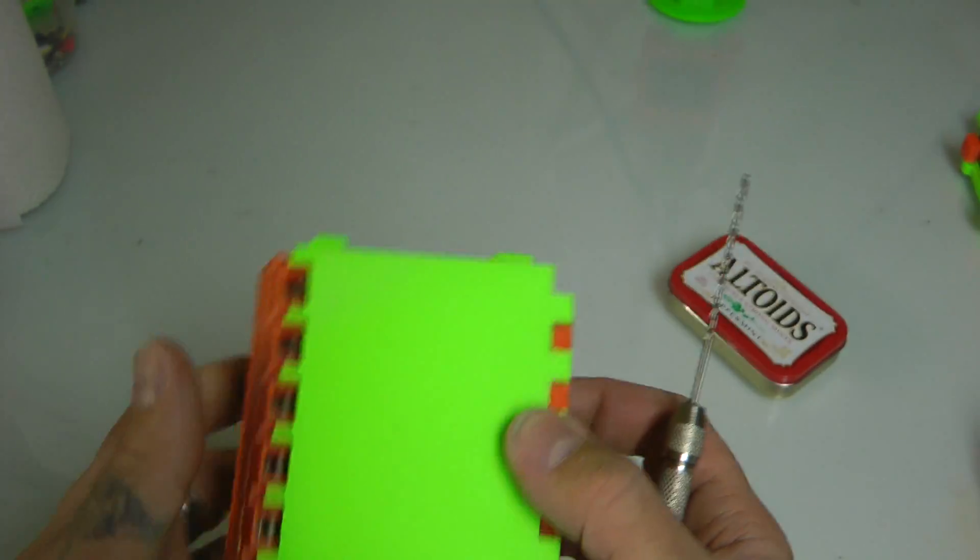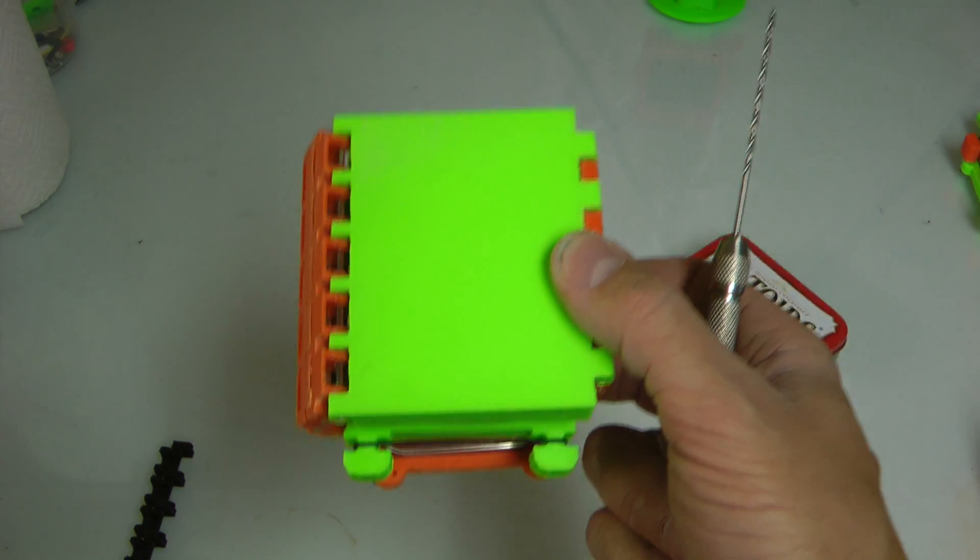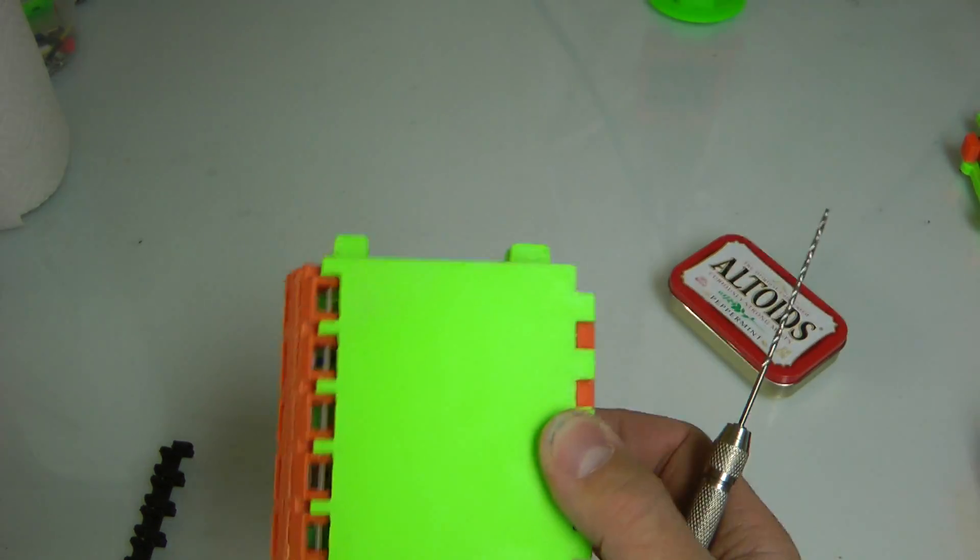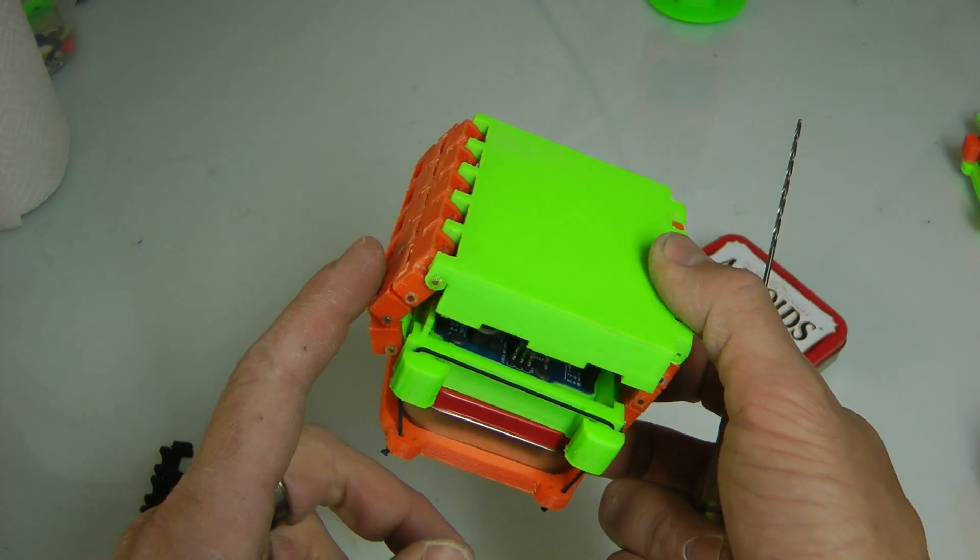Well, when you go to Thingiverse and you look for the Arduino lab version 3, you'll find a link in there on how to make PLA spikes and PLA rivets.